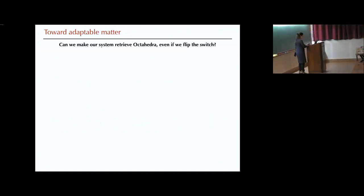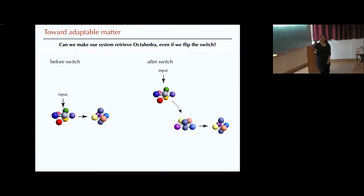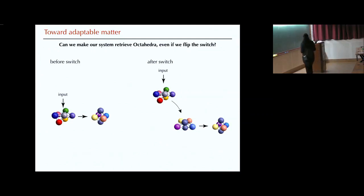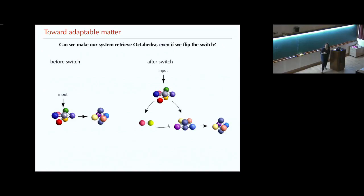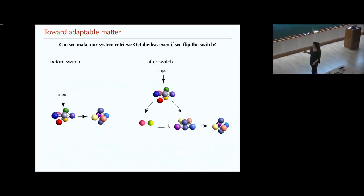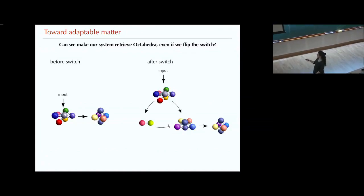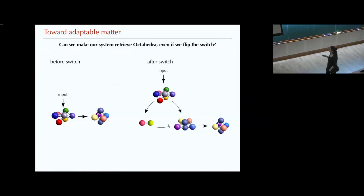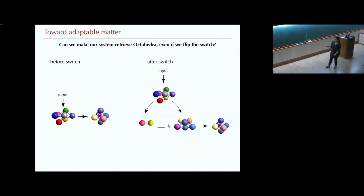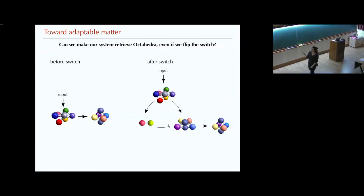The natural question that follows is: can we make our system still make octahedra even if we flip a switch? Before the switch we have one situation, and after the switch we have another. But we want this to be somehow unstable — we want to suppress formation of polytetrahedra and just make our desired structure. The solution is to add something negative in all the loops we are making. One solution we found is to basically allow our structure to make yet another structure that will suppress formation of the unwanted one. You've seen these kinds of feedback loops in Sandeep's talk, Sunil's talk, and many other talks.